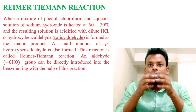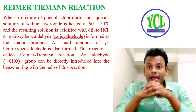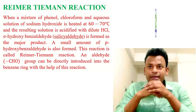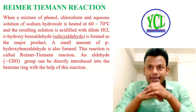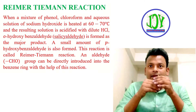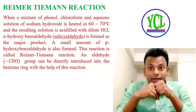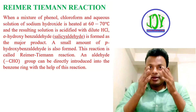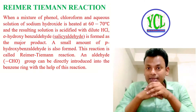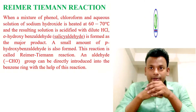Reimer-Tiemann reaction: when a mixture of phenol, chloroform, and aqueous solution of sodium hydroxide is heated at 60 to 70 degrees centigrade and the resulting solution is acidified with dilute HCl, ortho-hydroxybenzaldehyde — that is salicylaldehyde — is formed as a major product.